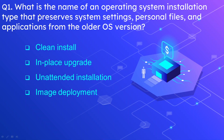Question number 1: What is the name of an operating system installation type that preserves system settings, personal files and applications from the older OS version? The options are clean install, in place upgrade, unattended installation, and image deployment. The correct option is in place upgrade.